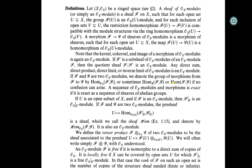If F and G are two O_X-modules, we denote the group of morphisms from F to G — this is a group, sometimes written in various notations. A sequence of O_X-modules and morphisms is exact if it is exact as a sequence of sheaves of abelian groups.